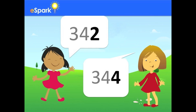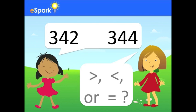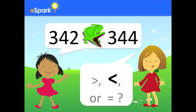Now let's look at the ones digits. Which is greater, two or four? That's right! Four is greater than two. That means Michelle collected more stickers than I did. So, which symbol goes in between these two numbers? Greater than, less than, or equal to? Remember, the alligator always wants to eat the biggest meal. That's right, another less than symbol.